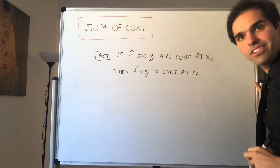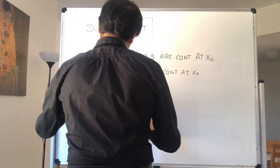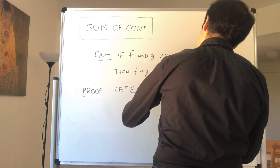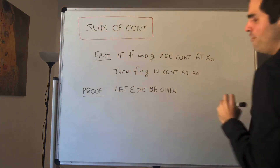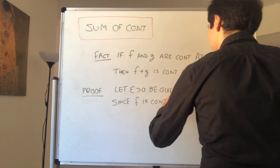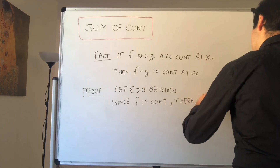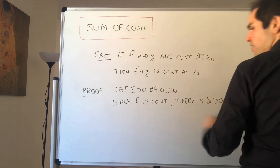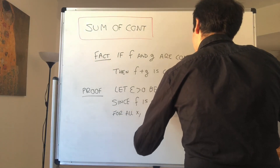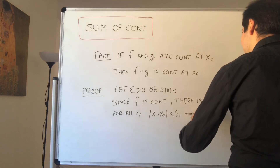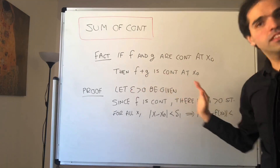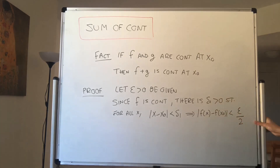Let me first do the epsilon-delta proof. Let epsilon be given. Since f is continuous at x naught, there is some delta 1 positive such that for all x, |x minus x naught| less than delta 1 implies |f(x) minus f(x naught)| is less than epsilon over 2, since we have two terms.